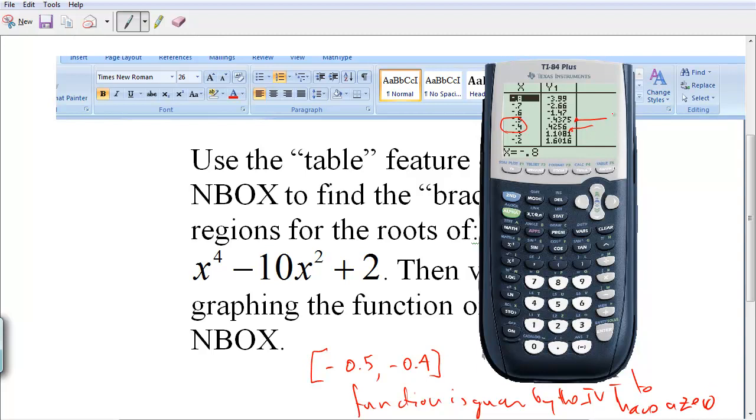Function is guaranteed by the IVT to have a 0. Because at one point the function is negative and at the other point the function is positive. Remember again what I mean by saying function is the y value. In one case it's negative 0.4375, in the other case it's positive 0.4256. So guaranteed that there's one answer between these two x values.